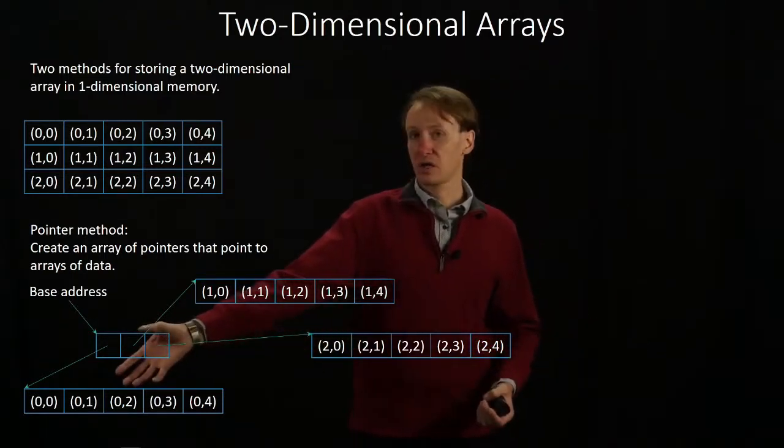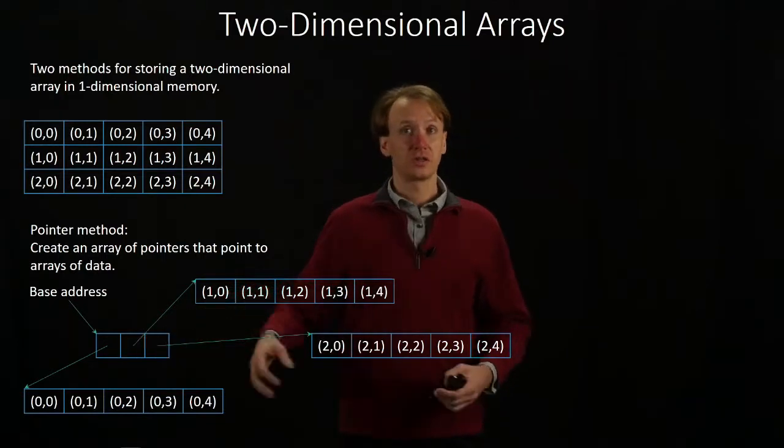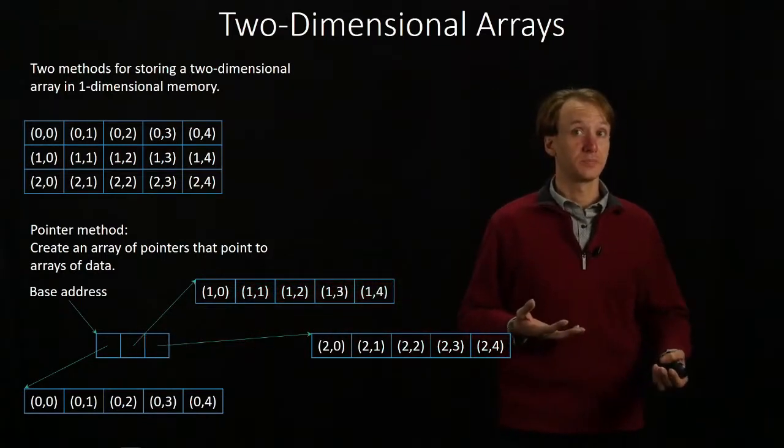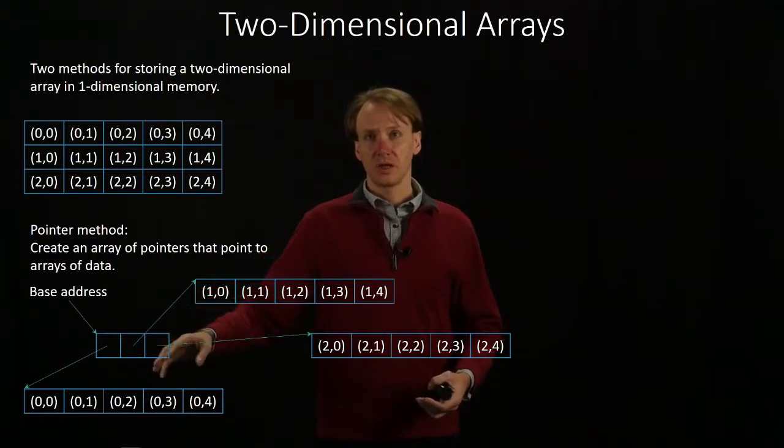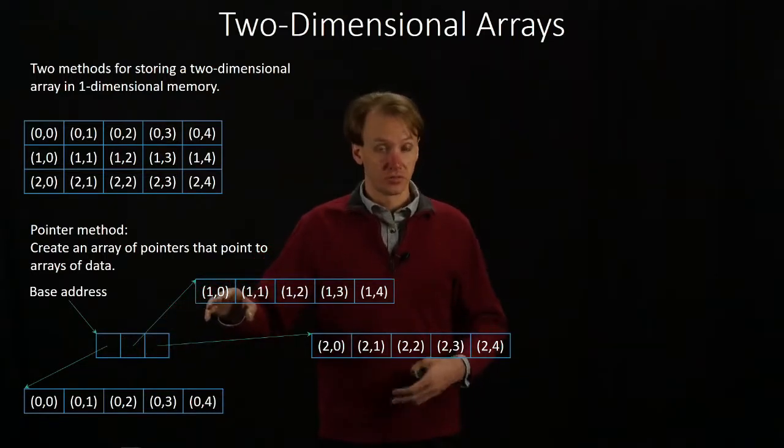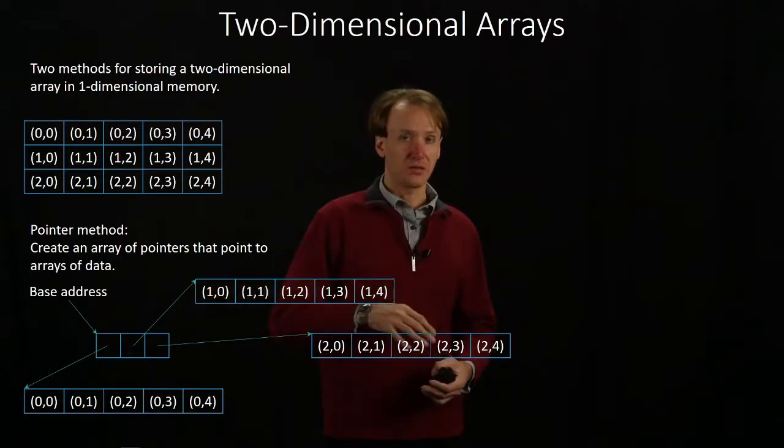And then I've got another high-level array that just tells me where that data is. So essentially I have an array of pointers to all the rows. And then each of these row arrays has the data from each column.